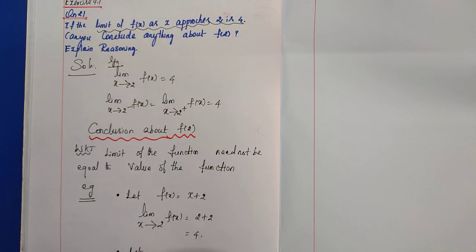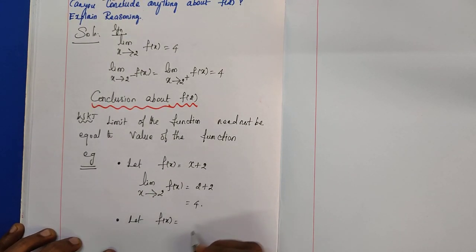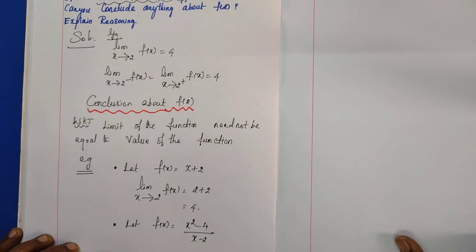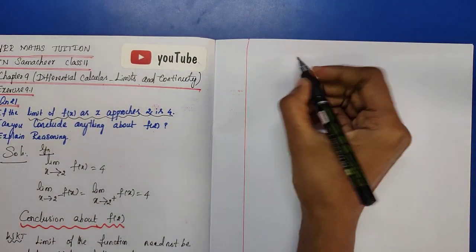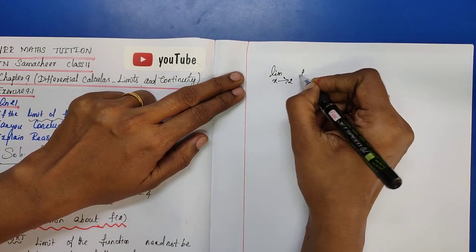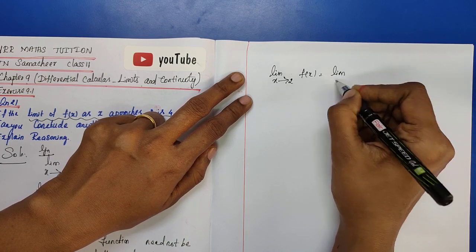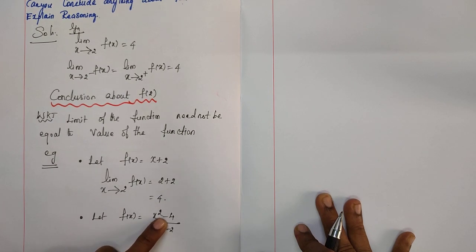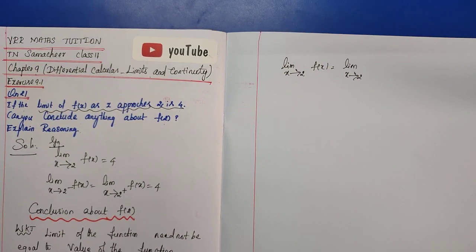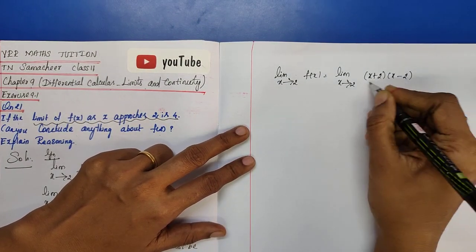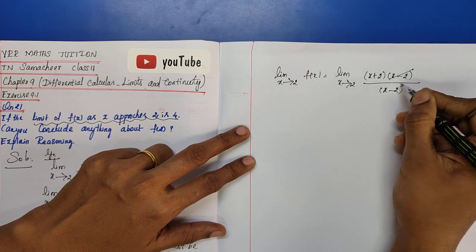One more example: let f(x) = (x² - 4) / (x - 2). The limit as x tends to 2 of f(x) equals the limit of (x+2)(x-2)/(x-2), and the (x-2) terms get cancelled, giving x + 2 evaluated at 2, which is 4.